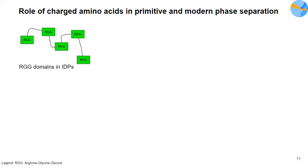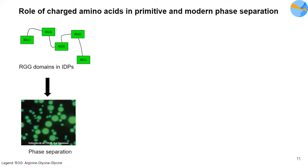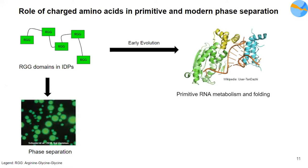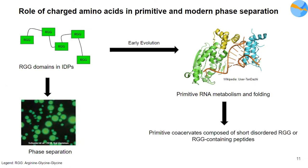There are certain charged domains called RGG — or arginine-glycine-glycine — domains that are present in modern IDPs, which can phase separate alone without the requirement of any other part of the protein. It has also been hypothesized that RGG domains evolved very early and have probably been responsible for regulating primitive RNA metabolism. This hints that short disordered RGG-containing peptides gave rise to primitive coacervates on early Earth.